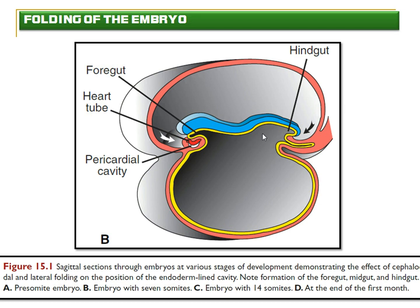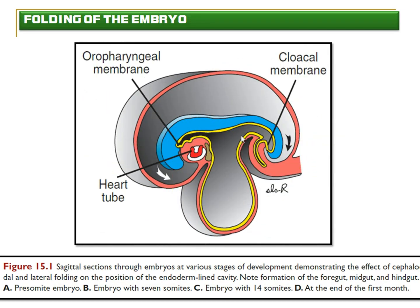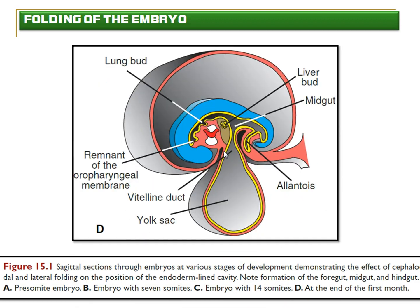Because of this cranial-caudal folding, the heart which was initially at the cranial-most portion slowly moves toward the midline. The part of the endoderm lining the yolk sac is being incorporated into the future gut tube being formed. We can see the heart tube in the pericardial cavity, and the wide communication between the future gut tube and the yolk sac continues to narrow.